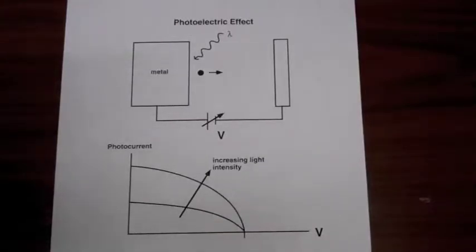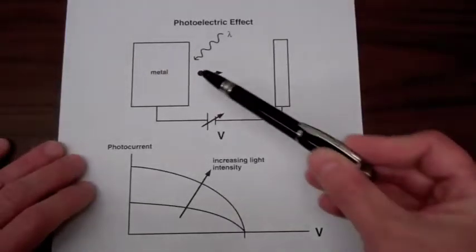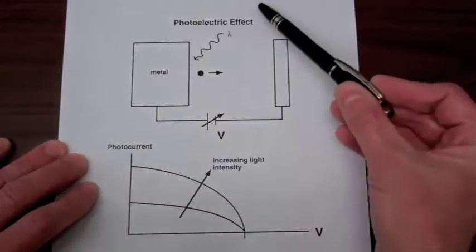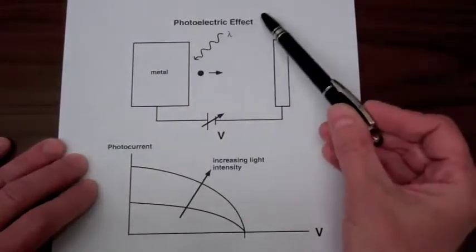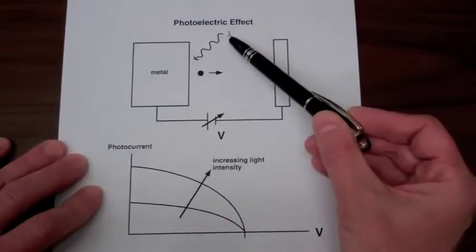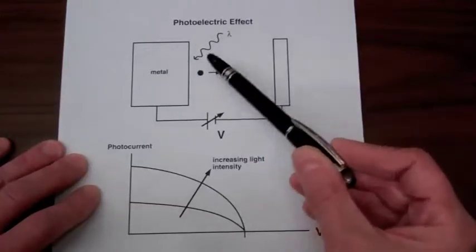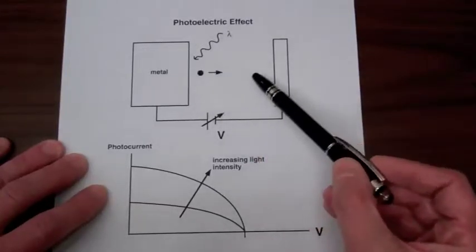The behavior of the emission presented several puzzles that could not be explained with classical physics. So here is our metal, and we're shining light on it, an electromagnetic wave at some single frequency or wavelength lambda. The electrons absorb energy from the electromagnetic wave and emit into the vacuum.